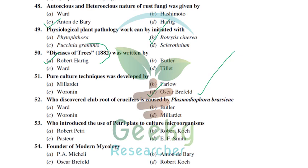M.S. Voronin, a Russian scientist and student of Anton de Bary, discovered the life cycles of club root of cabbage and potato wart. The pathogen of club root is Plasmodiophora brassicae, and the pathogen of potato wart is Synchytrium endobioticum — both named and discovered by Voronin.